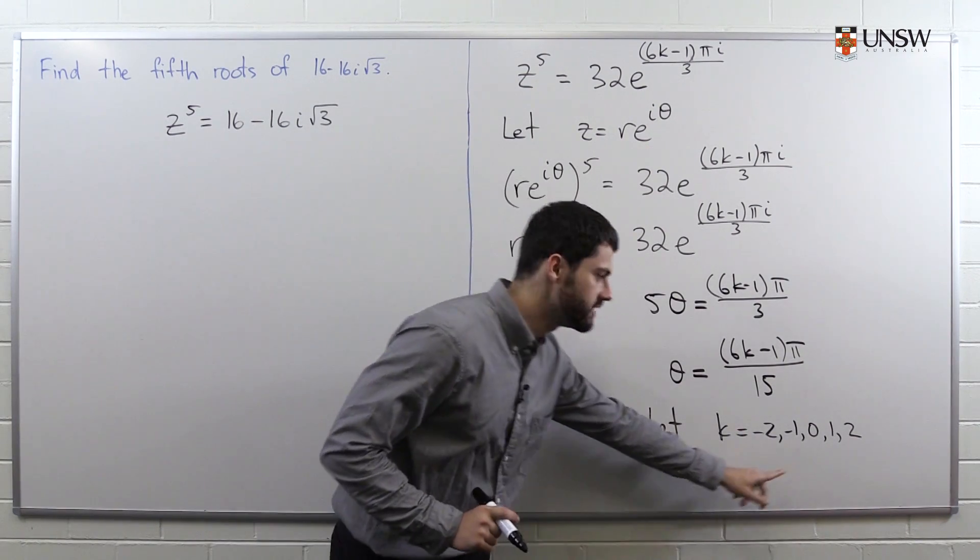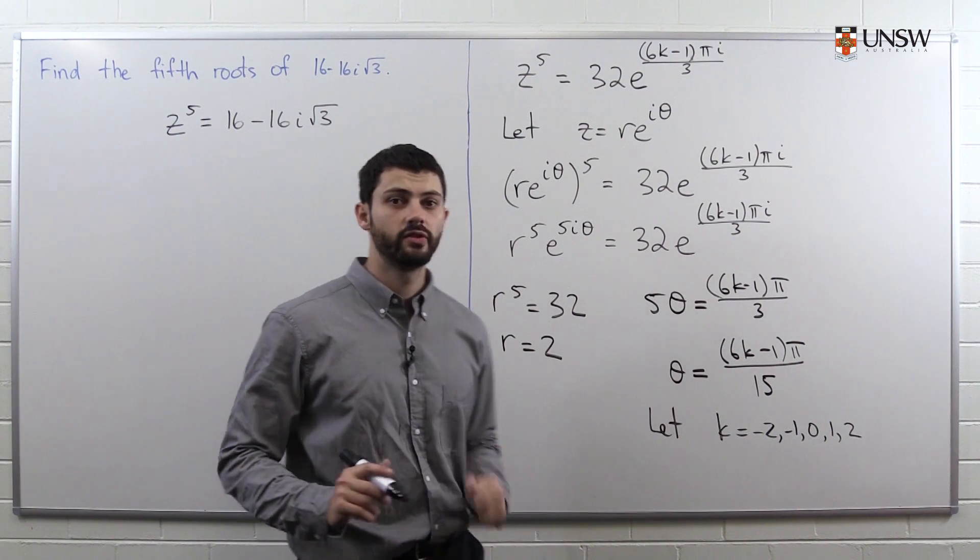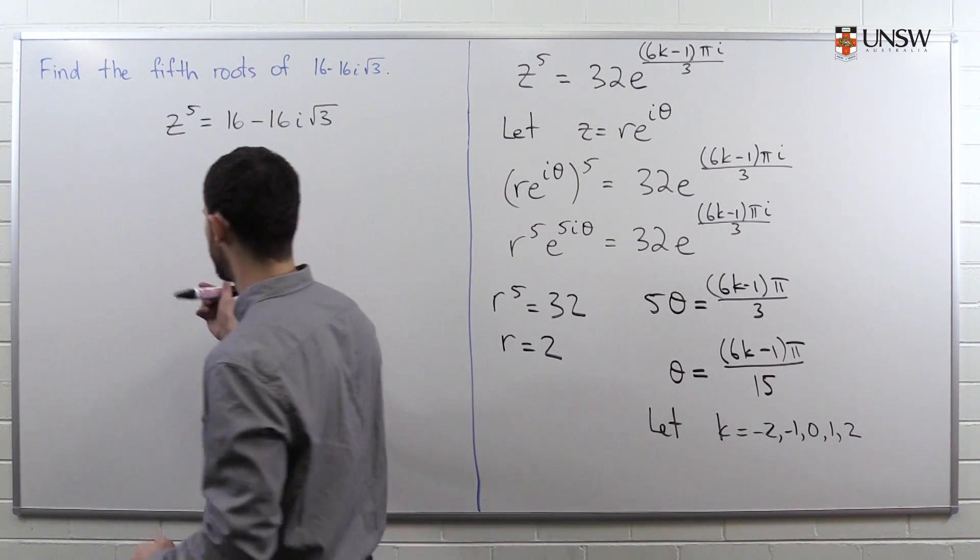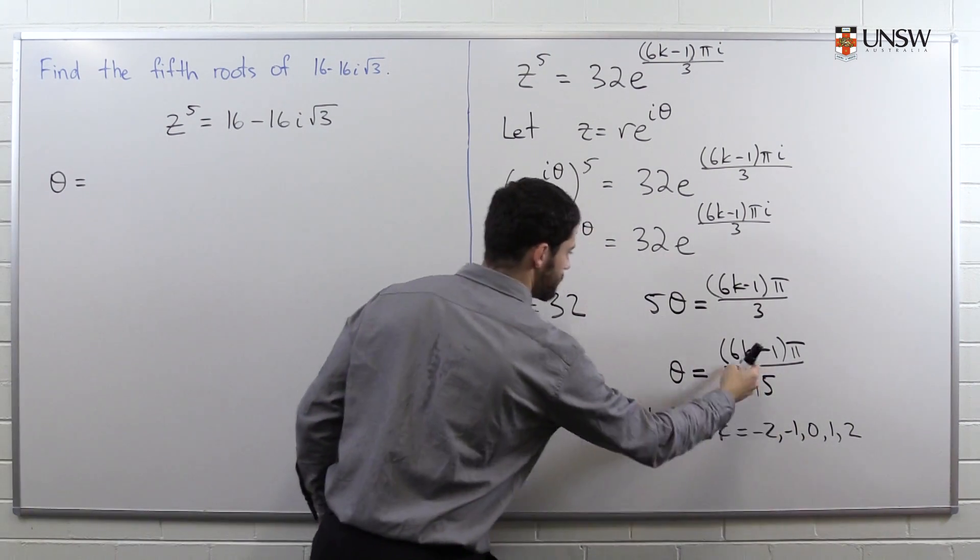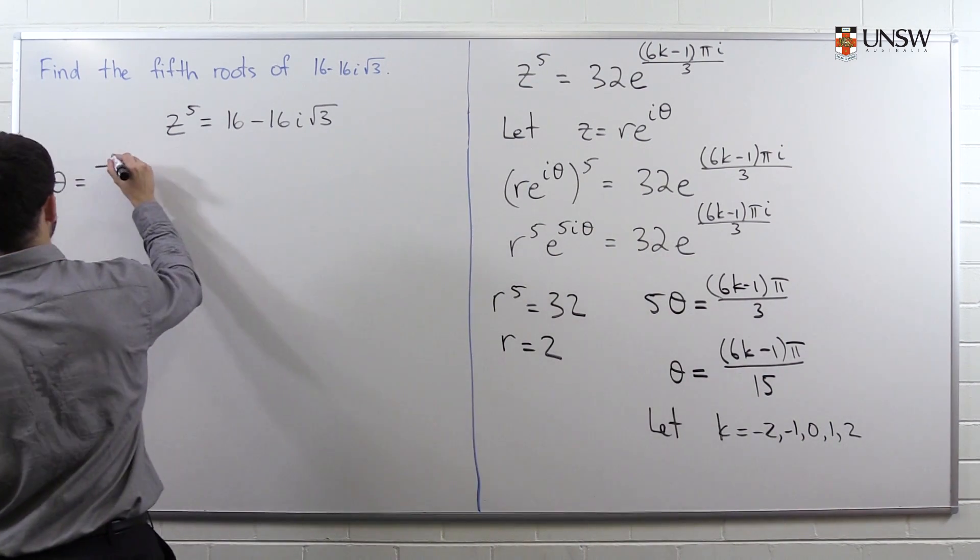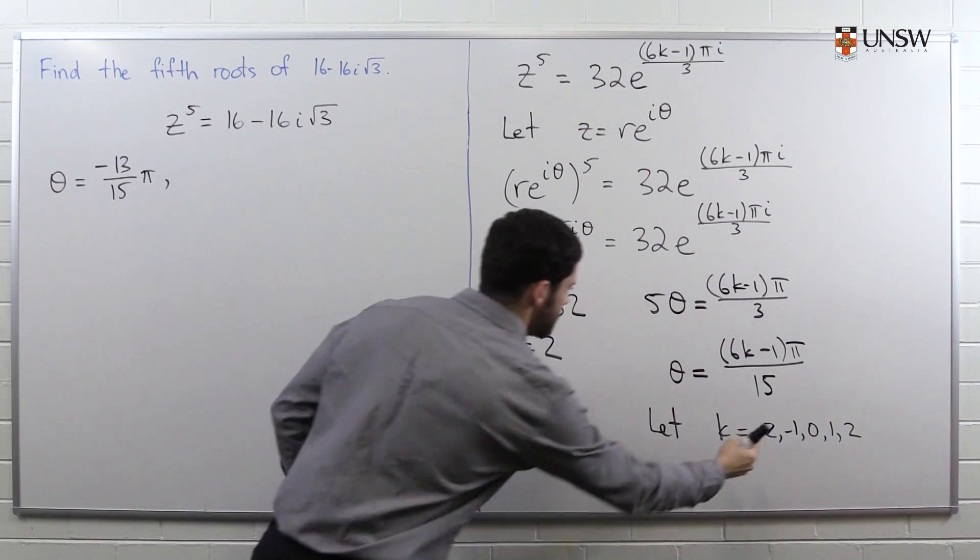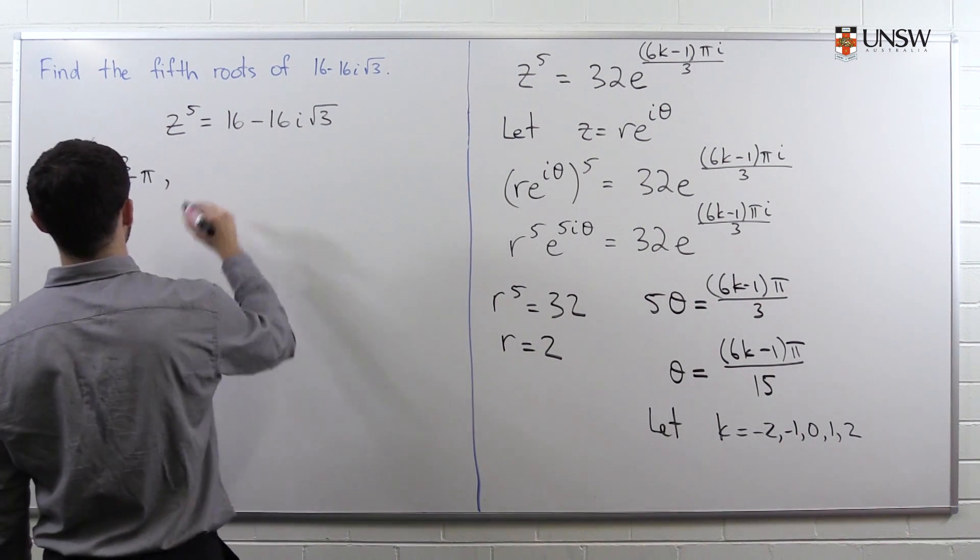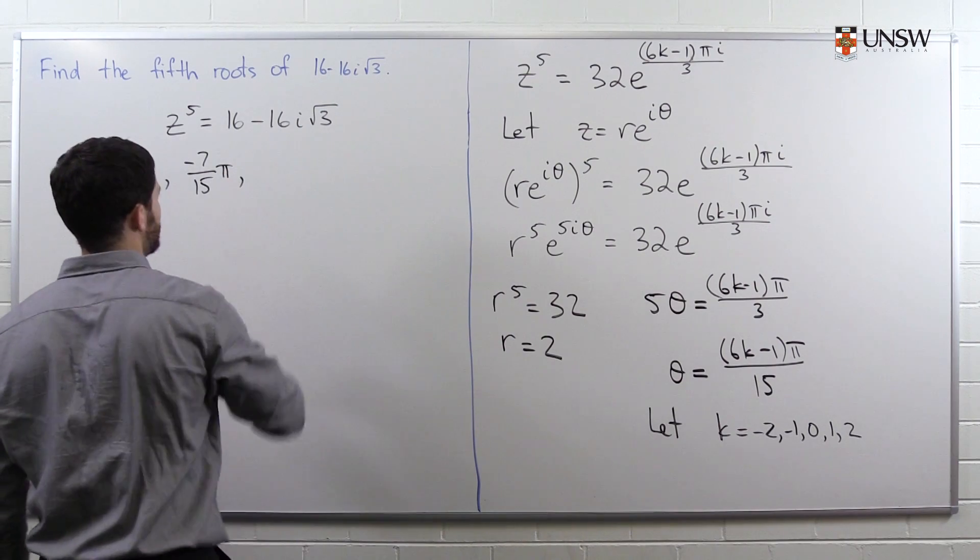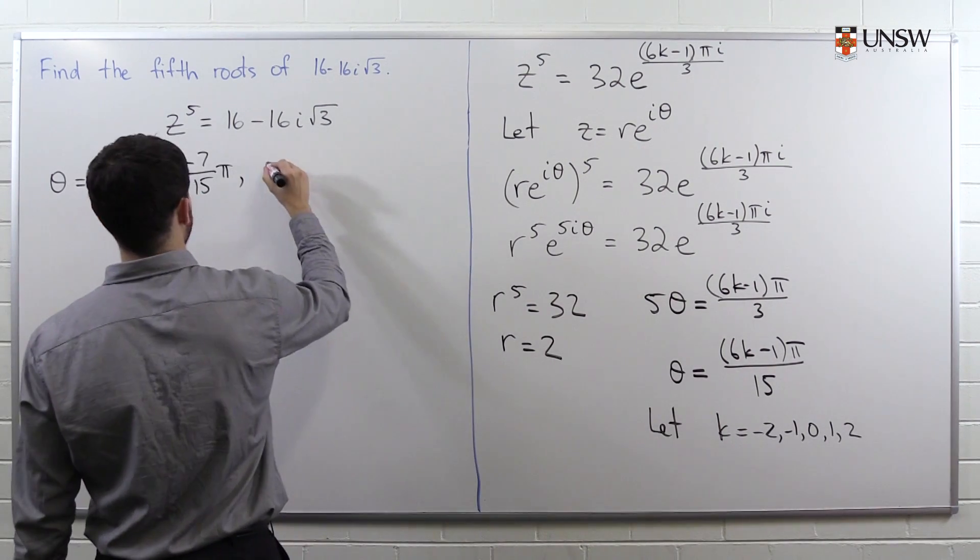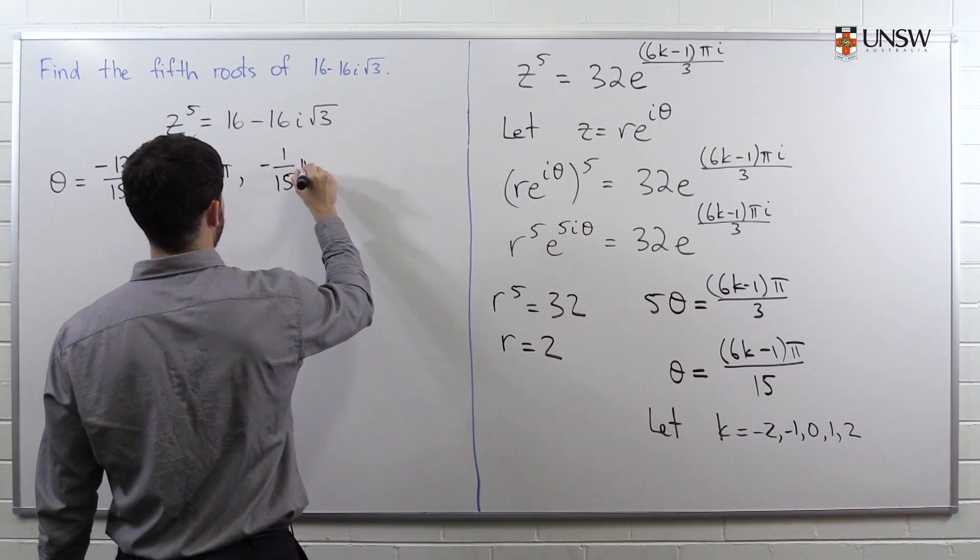So now we're going to substitute in these five different values of k to give us five different values for theta - the five different arguments corresponding to z that we're looking for. If we substitute in -2, we will get -13π/15. If I substitute in -1, I will get -7π/15. If I substitute in 0, I get -π/15.